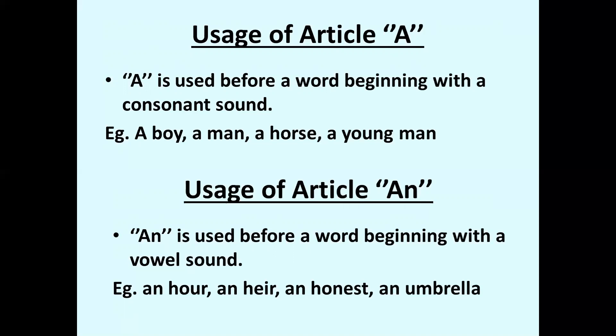Let us see the usage of article AN. AN is used before a word beginning with a vowel sound. We know vowels are A, E, I, O, U. So whatever word we come across starting with the vowel letters, we have to use AN before it. For example: an hour, an air, an honest, an umbrella.